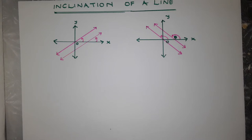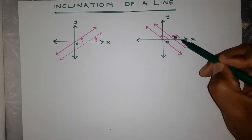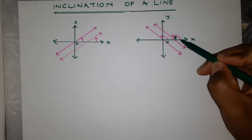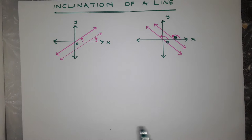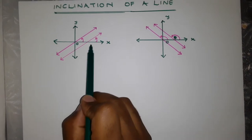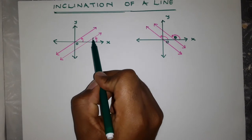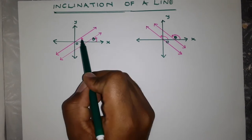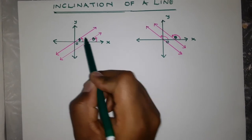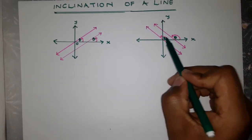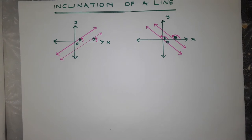The inclination of a line — what we are speaking about is an angle, theta, that a line makes with a positive x-axis. So this is the angle right here; theta will be here. Our main goal is to find this angle, theta.